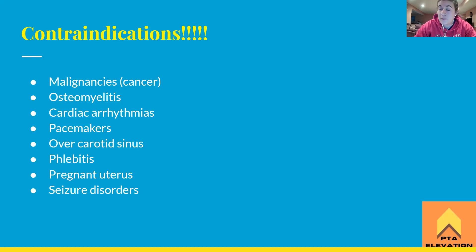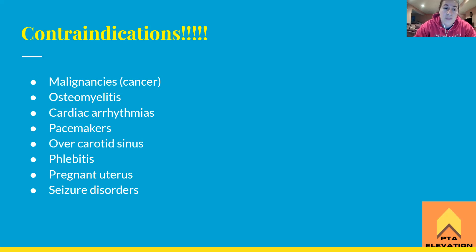Any cardiac arrhythmia — the cardiac system is controlled by electrical impulses from the SA node, the pacemaker of the heart. Introducing extra electrical current to the body might throw off existing arrhythmias, like A-fib, so we don't want to make that worse.